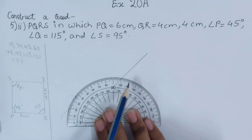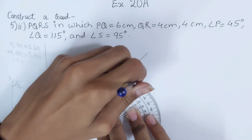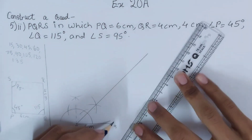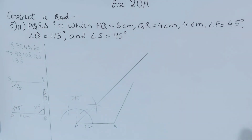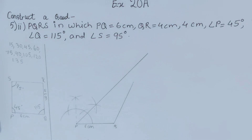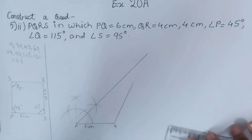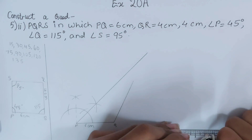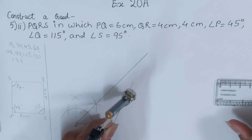On the protractor, mark where 115 degrees lies and just put a dot there. Now join this to form the 115 degree angle — it's very easy, we all know how to make angles with a protractor. Now I have to mark QR of 4 centimeters, so I'll open my compass to 4 centimeters, keep it at point Q, and cut one arc.